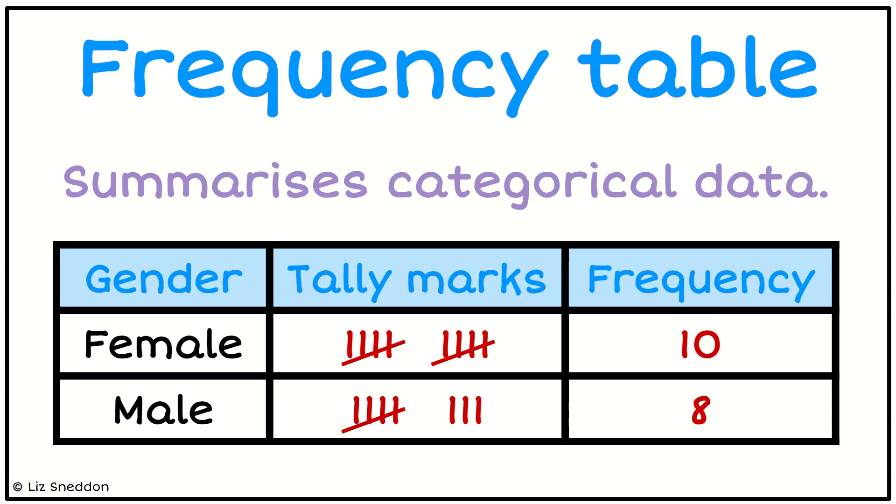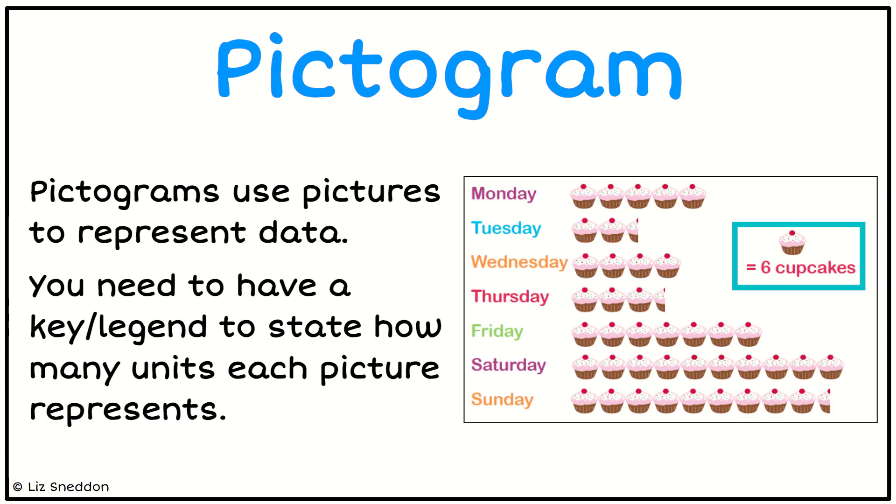A frequency table - we can take our tally chart and turn that into frequencies. That's essentially all we're doing. A pictogram is a graphical representation of data, and you always need to have some kind of key or legend.